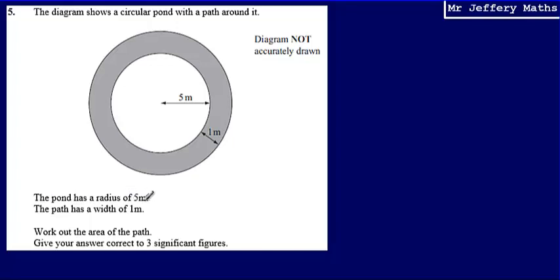Then we're told that the pond has a radius of five meters, so that's our pond in the middle. And then the path has a width of one meter, so that shaded part is our path.